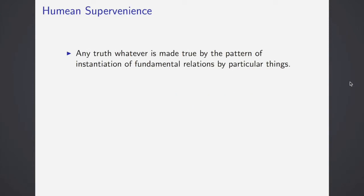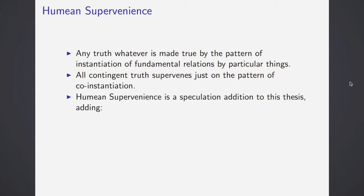What is Humean supervenience? You have to start off with saying that any truth whatever is made true by the pattern of instantiation of fundamental relations. All contingent truth is going to supervene just on that pattern of co-instantiation. Humean supervenience is a speculation that's added to this thesis, saying the fundamental relations are exactly the spatiotemporal ones. If you want to describe something perfectly, look at where it is in space and how it's related to other things in space, and where it is in time and how it's related to other things in time.